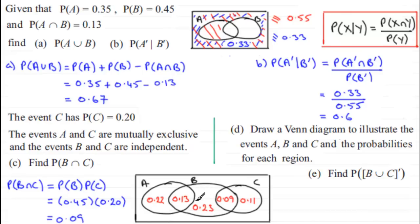All regions including the area outside A, B, and C must total 1. Adding all known probabilities and subtracting from 1 gives 0.22 for the outside region. That completes part D.